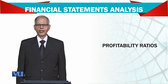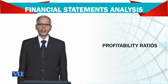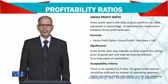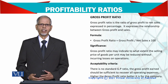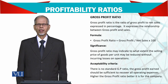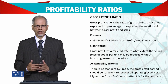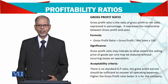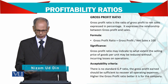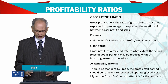Bismillahirrahmanirrahim. Let's see the profitability ratios. We can work on a number of profitability ratios, but generally we have the gross profit ratio. Here we compare the gross profit with the net sales — total net sales — and find out how much gross profit is as a percentage of sales. Gross profit ratio is gross profit to net sales, expressed in percentage.